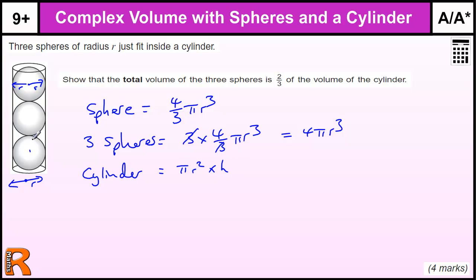Well, the height - because these are radius R and R, R and R, R and R - the height of this cylinder is actually 6R.